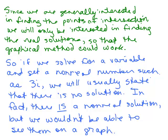If we solve for a variable and we get a nonreal number such as 3i or square root of i or anything that has an imaginary number, we'll usually state that there is no solution, or at least that particular ordered pair would not be a solution. But in fact, there really is a nonreal solution, we just wouldn't be able to see it on a graph. In most classes when you're asked to solve systems of nonlinear equations, we won't be writing down any complex numbers in the ordered pairs unless you're asked specifically to do that.